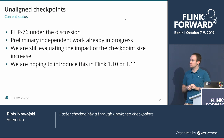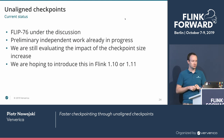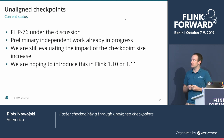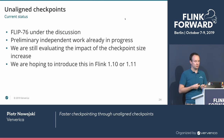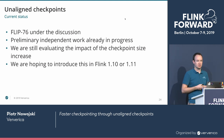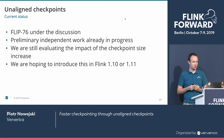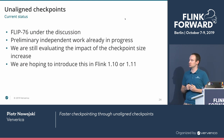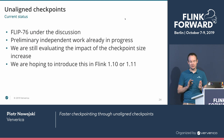A couple of final words on current status. This idea of unaligned checkpoints was proposed as FLIP-76 and is under discussion by the community. Some preliminary and independent work has already started, and we are still evaluating the impact of checkpoint size increase on jobs and considering options to mitigate this. Assuming we resolve the discussions quickly, we are hoping to introduce this feature in Flink 1.10, though more likely we are aiming for Flink 1.11.